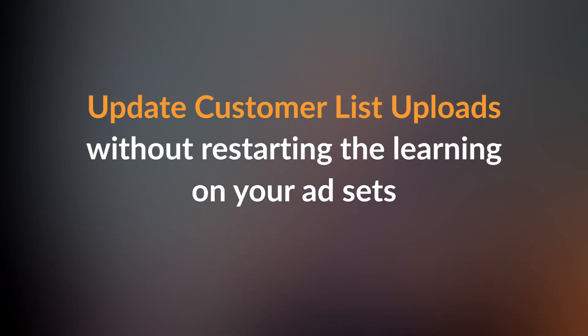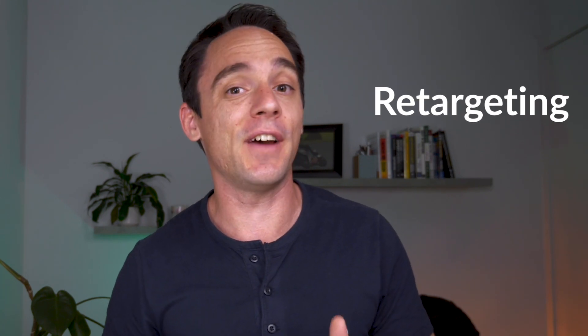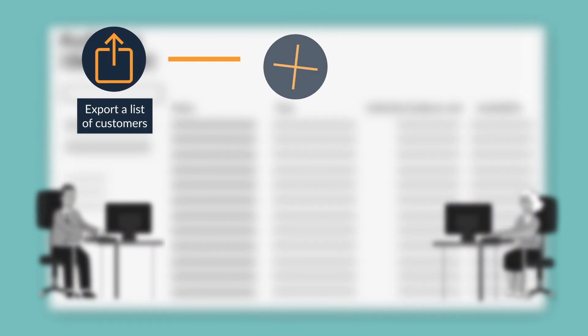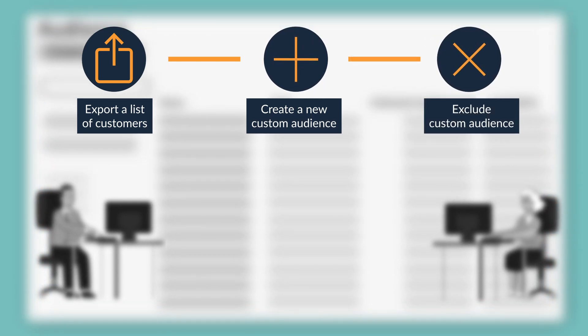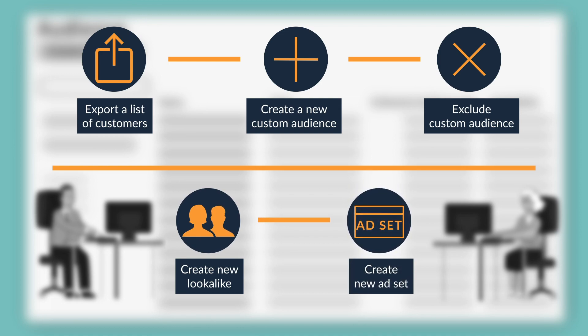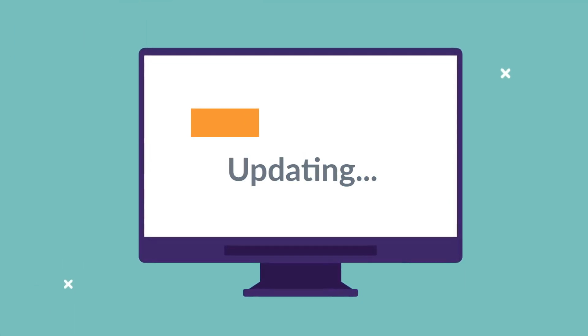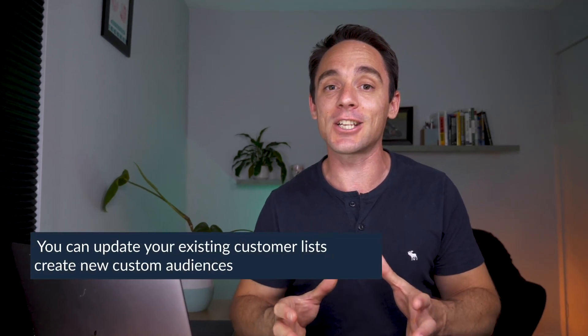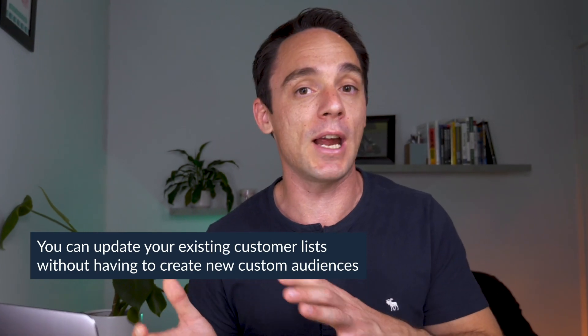The first one is the ability to update customer list custom audiences without resetting all of the data on your ad sets. Uploading an existing email list into Facebook to use as a custom audience — either for retargeting or as the foundation for a lookalike audience — are both great tactics. But often people will use these audiences and then when they get more customers, they export another list, create a new custom audience, or create new ad sets to target new lookalikes. That's not ideal because updating your existing ad sets resets all of the optimization and learning back to zero, which negatively impacts performance.